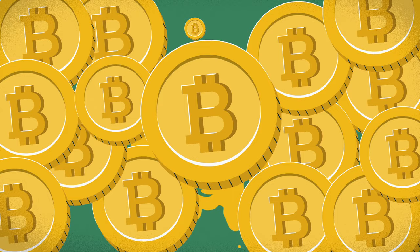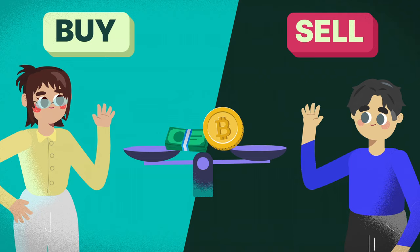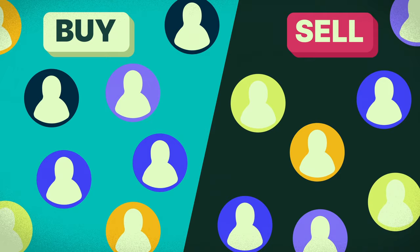Take Bitcoin, which is generally considered to be a highly liquid asset due to its high volume. You can buy and sell it with minimal impact on its price and do so at a fair price. This is one of the major benefits of a highly liquid market.